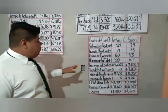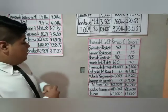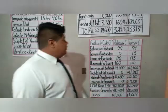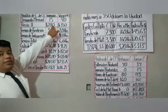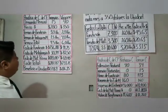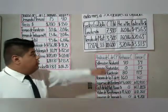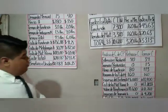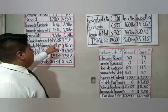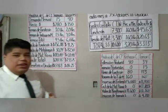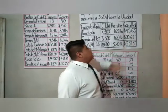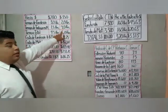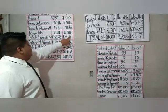Para la materia prima de tranvías: $1,800 divididos entre 15 tranvías de demanda da un costo de $120 dólares por unidad. Para vagones, el costo de fundición es $45.63 multiplicado por 2 horas por unidad, dando $91.25. En tienda de materiales, $20.63 por hora multiplicado por 4 horas de trabajo en metalurgia da $82.50.